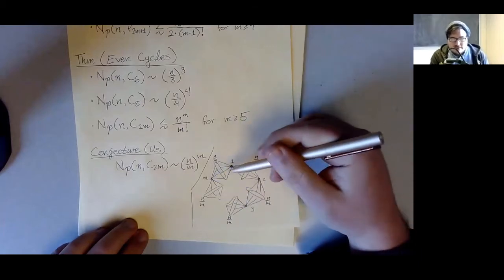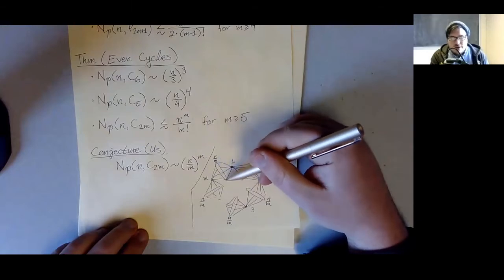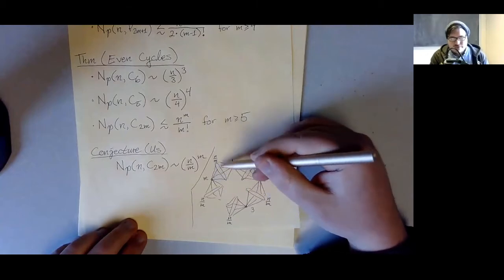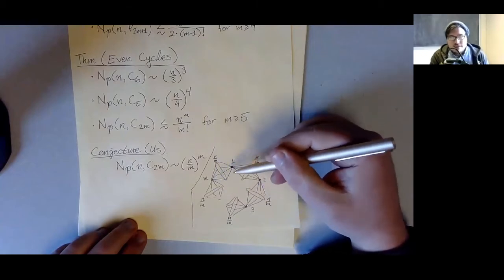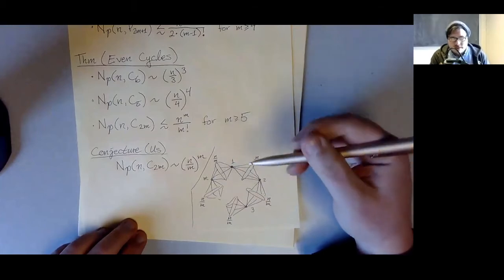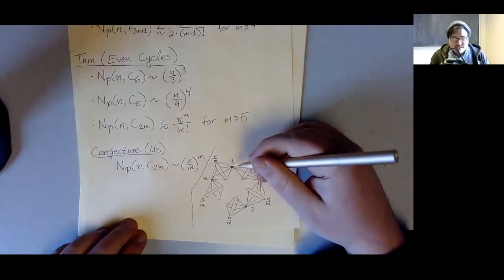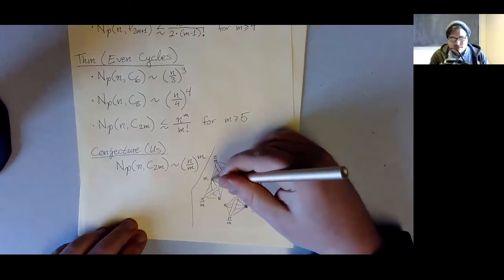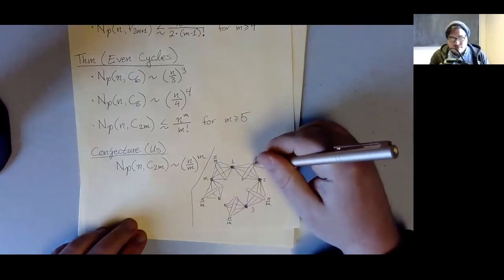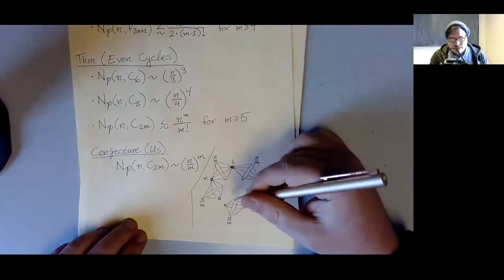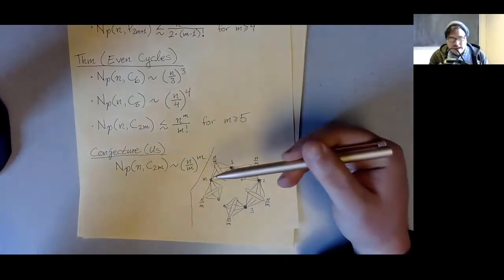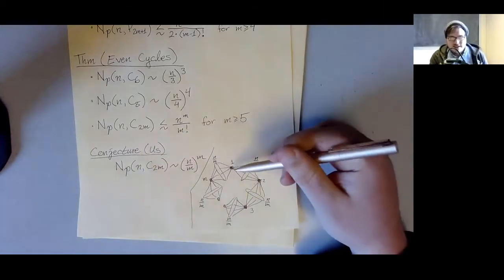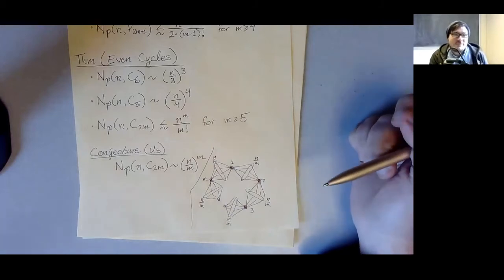Connect all the blown-up vertices to both endpoints of the original edge. If we want to count 2m-cycles, we first lay down every other vertex at the vertices of the original cycle. For all intermediate vertices, we have n/m choices for each. So we have about (n/m)^{2m} cycles in this construction, and you can quickly verify this is a planar graph.